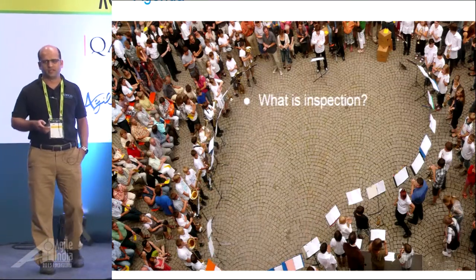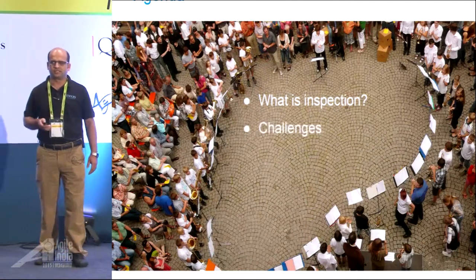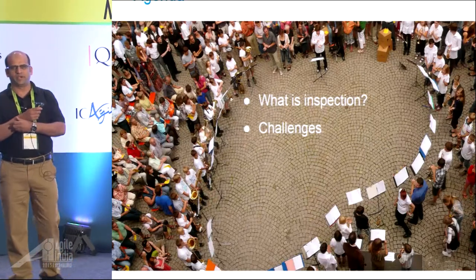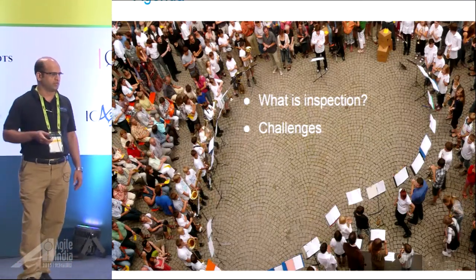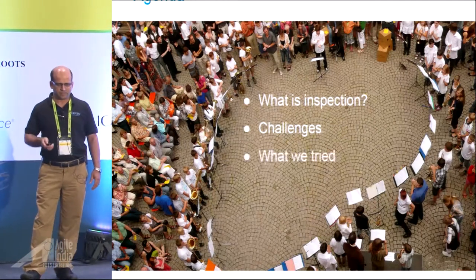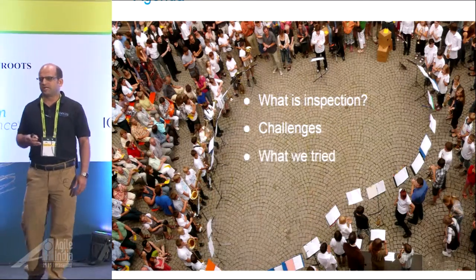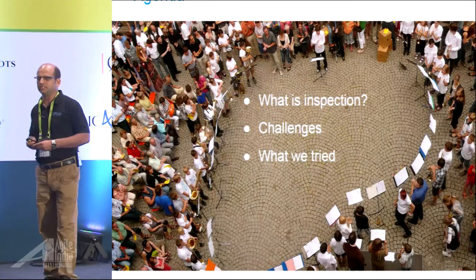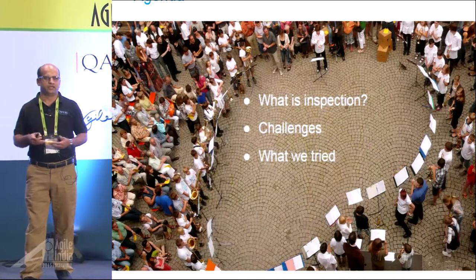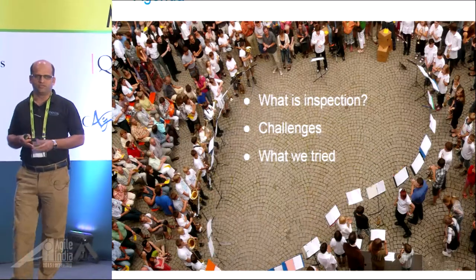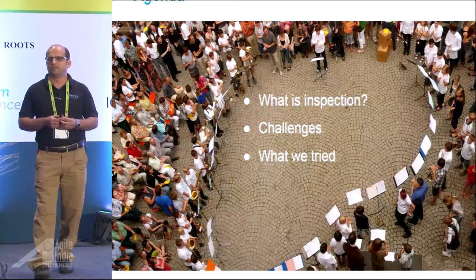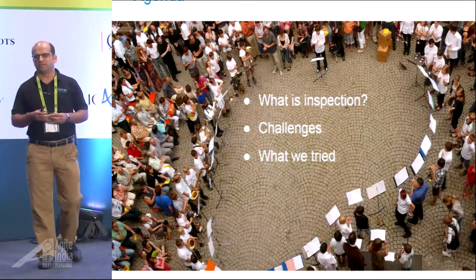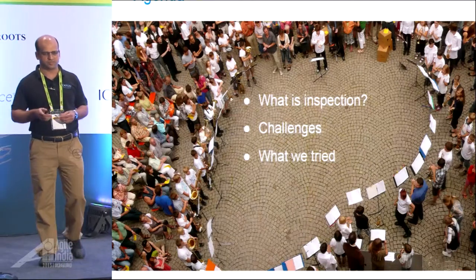We will see what inspection is, and what type of challenges inspection brings into our development and into faster deliveries, which is the need of the hour. Then, when we realize we need to change, we will look at what we tried to do to come out of these challenges. Initially, we took a slightly wrong path, and then we'll look at how we course corrected that path after realizing this was not the right way to solve the inspection problem.